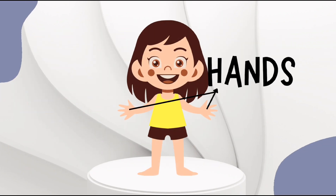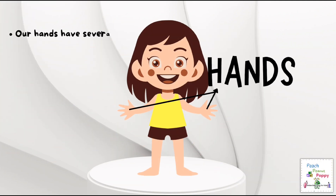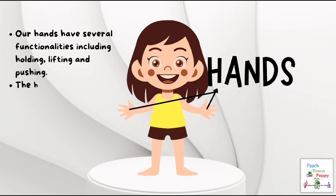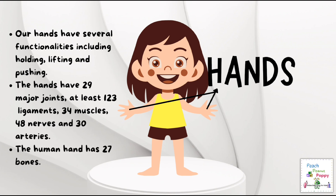Next are the hands. Our hands have several functions including holding, lifting and pushing. Our hands have 29 major joints, at least 123 ligaments, 34 muscles, 48 nerves and 30 arteries. The human hand has 27 bones.